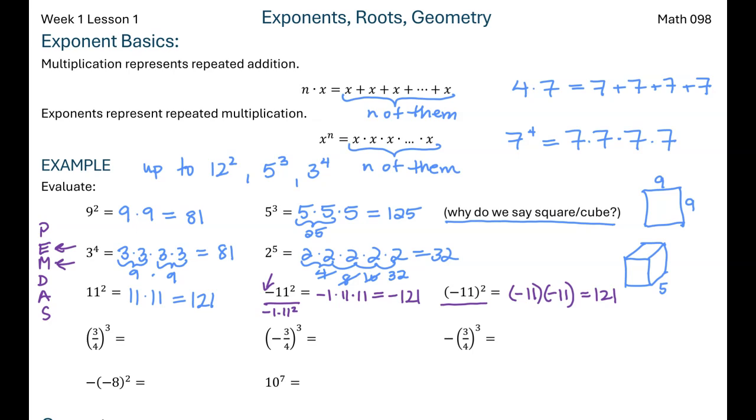For fractions, with fractions, you can, and I have exponent properties coming up, but I figured I'd say it right now. You basically get to cube the top and the bottom. So this is meaning 3 fourths times 3 fourths times 3 fourths, which means 3 times 3 times 3 on the top, 3 cubed is 27, and 4 times 4 times 4 on the bottom, which is 64.